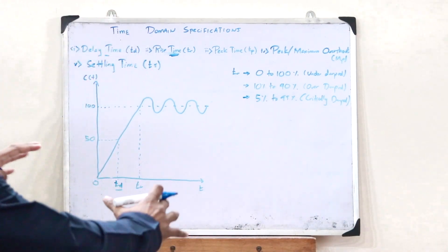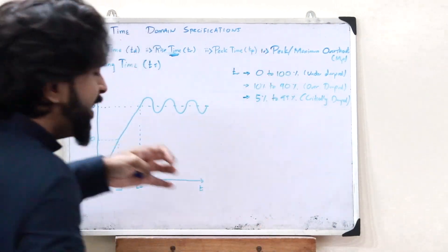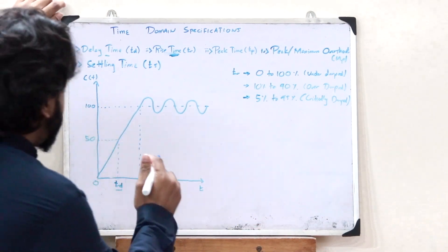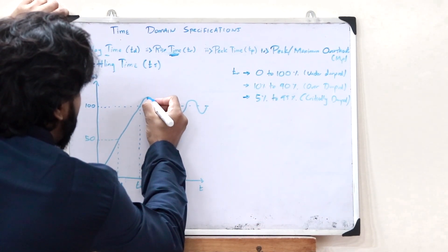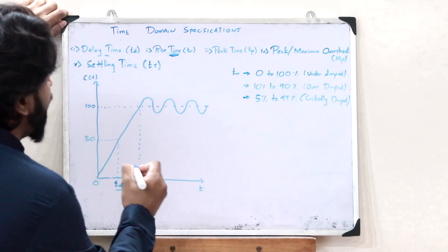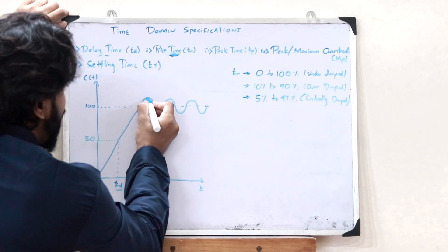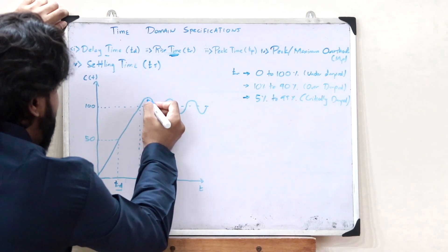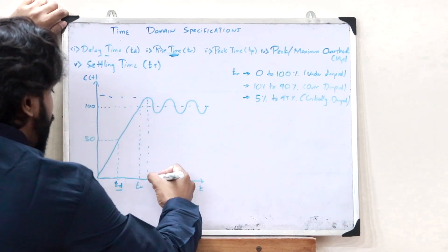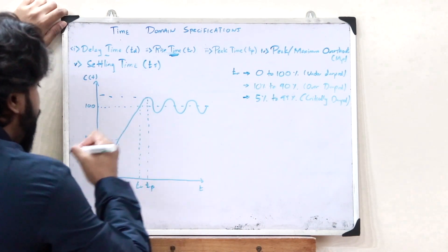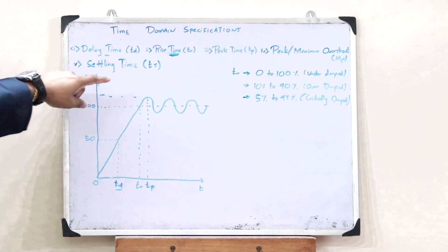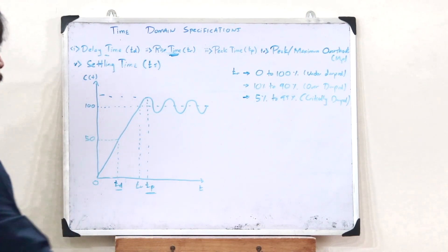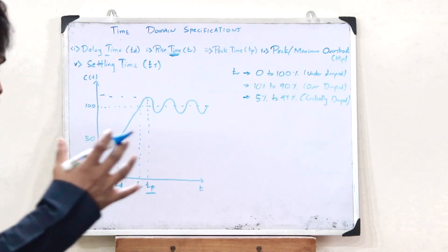Next, we have what you refer to as the peak time. Peak time is defined as the amount of time that is taken by the control system to reach the peak value. If this is the peak value, then the amount of time taken by the control system to reach that peak value is simply what you refer to as the peak time of a particular control system.